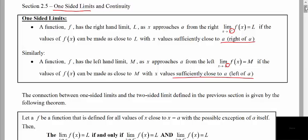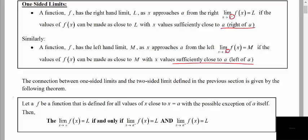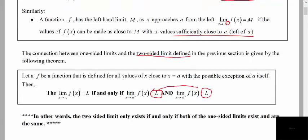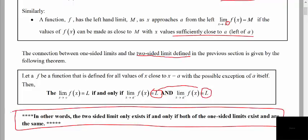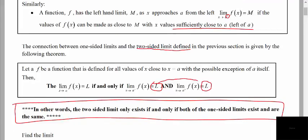One thing we want to be careful about is that while we do have the one-sided limits, the two-sided limits that we talked about in the last section are only going to exist if the left-hand limit and the right-hand limit are exactly the same. So these two values have to match in order for the two-sided limit to exist. While the one-sided limits can exist separately, the left and right-hand limits have to match — we have to be approaching the same value from both sides.